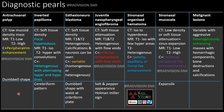Diagnostic pearls: Antrochoanal polyp shows peripheral rim enhancement with dumbbell shape. Inverted papilloma shows focal hyperostosis on CT at the site of origin with alternating hyper- and hypo-intense lines giving the convoluted cerebriform pattern. Esthesioneuroblastoma shows homogeneous or heterogeneous contrast enhancement with dumbbell shape and waist at the cribriform plate. Juvenile nasopharyngeal angiofibroma shows intense post-contrast enhancement with flow voids, salt-and-pepper appearance, and Holman-Miller sign. Sinonasal organized hematoma shows patchy, papillary, or frond-like enhancement. Sinonasal mucocele is an expansile lesion with minimal peripheral rim enhancement. Malignant lesions are heterogeneously enhancing and extend into adjacent intracranial and intraorbital structures.